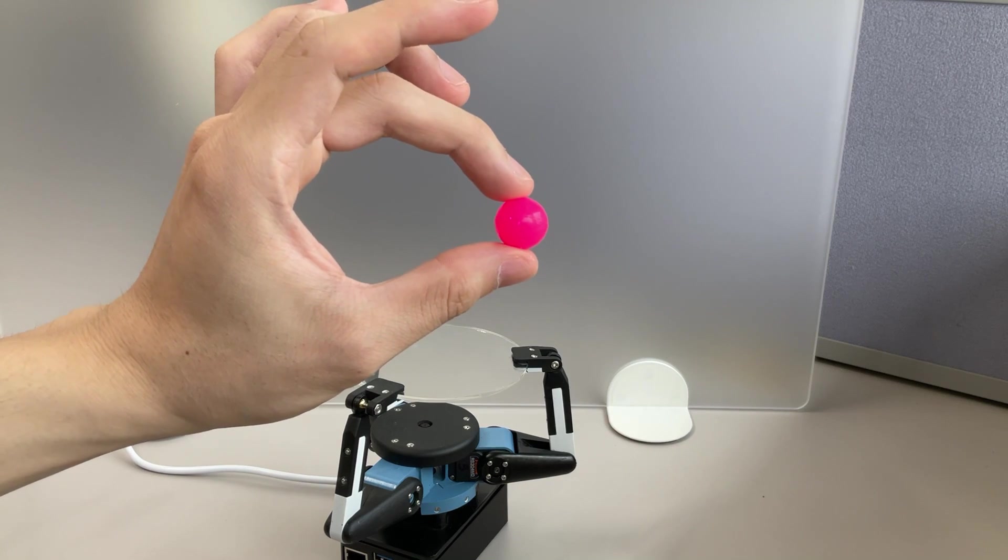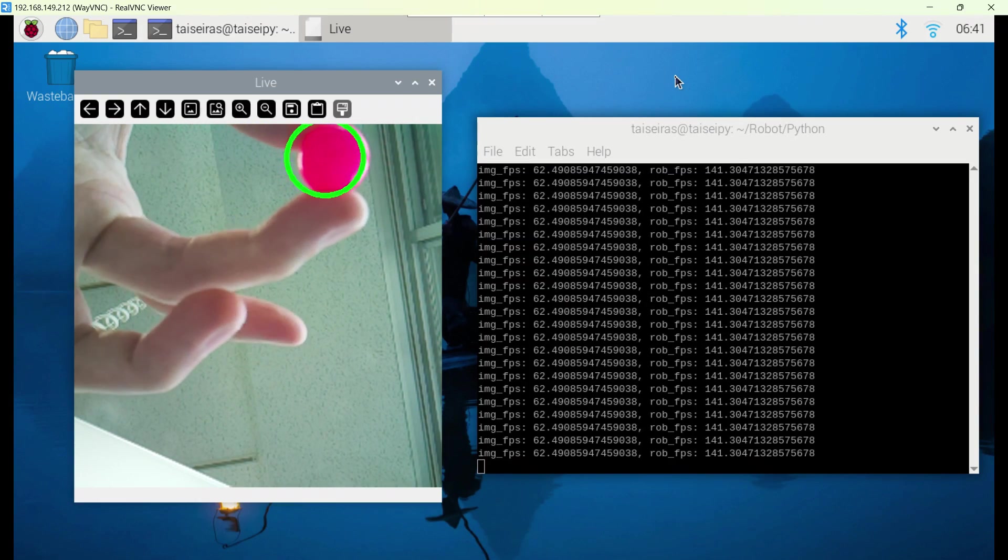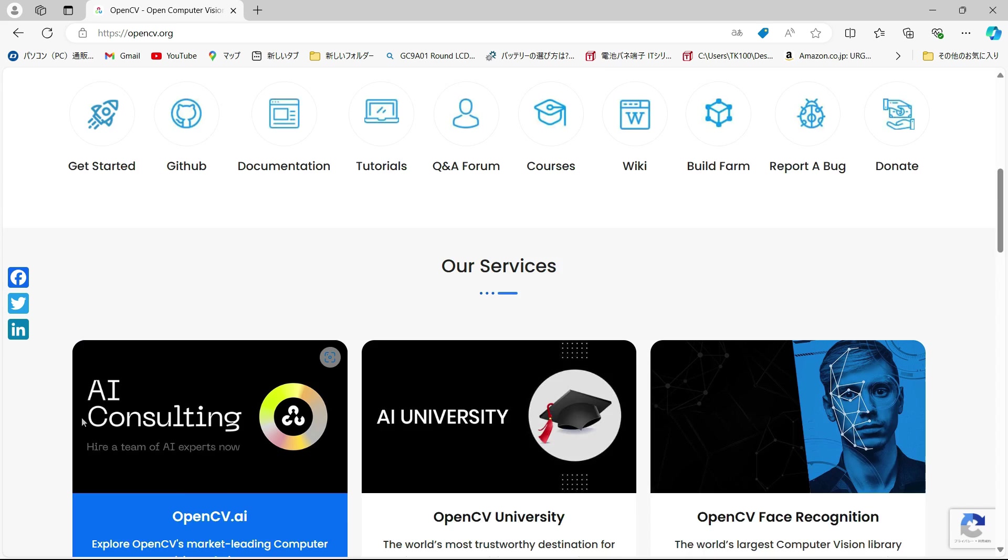Since the ball is pink in color, the coordinates of the ball are obtained by finding the center of gravity of the pink area in the image. This kind of processing can be implemented very easily using OpenCV, a computer vision library.